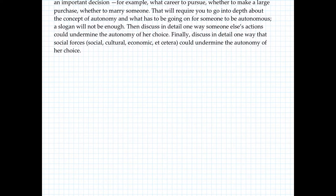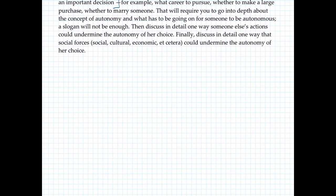So Indigo is normally an autonomous person — that's just setup. Discuss how she would go about making an important decision. That's one thing you need to do. Next, you need to go into depth about the concept of autonomy and what has to be going on for someone for them to be autonomous. This word 'require' tells you there's a task here. A slogan will not be enough — it's not going to be enough to just say autonomy means being the boss of you and then running with that. We're going to need more detail.